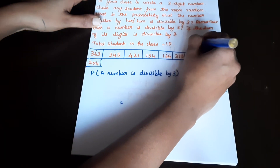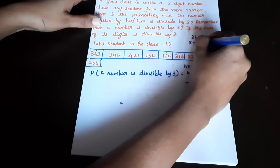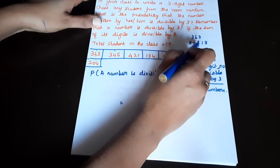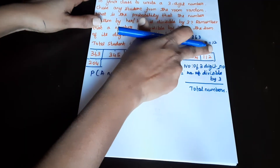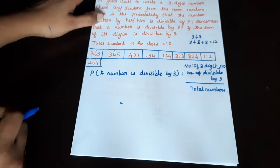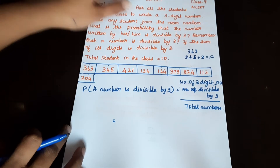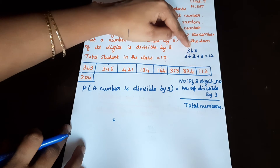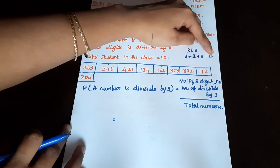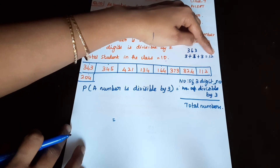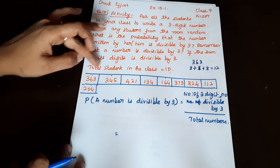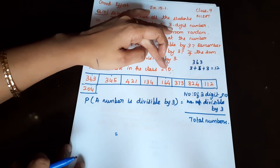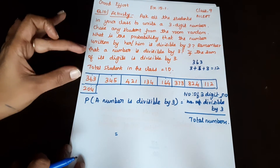For example, 3 plus 6 plus 3: 3 plus 6 is 9, and 9 plus 3 is 12. We check if the digit sum is divisible by 3 using the 3 times table. We add up the digits and check divisibility. So the total students in the class is 10.